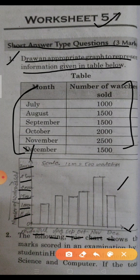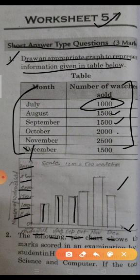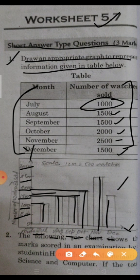So in July they sold 1000 watches. In August 1500, in September 1500, in October 2000, in November 2500, in December 1500. So these are the different watches sold by the different months.